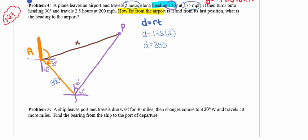I'm going to do the same exact thing to find the distance traveled in the second leg of my journey. In the second leg, we're traveling at a rate of 200 miles an hour for two and a half hours, so the distance traveled in that second leg was 500 miles.